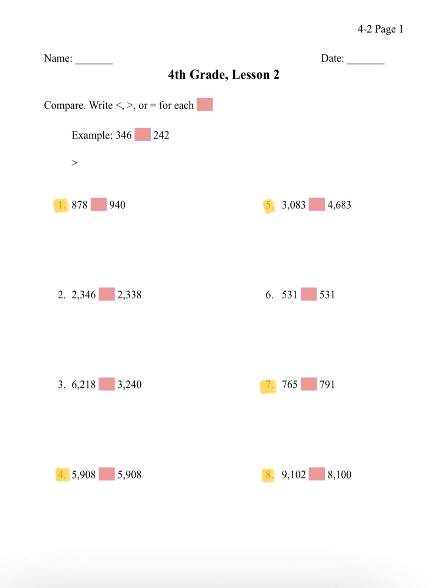Hi, I'm Eileen, and today I'm going to be doing a YLOK 4th grade Lesson 2 worksheet. Don't forget to write your name and your date. The directions say compare — write greater than, less than, or equal to for each blank spot. The example we have is 346 and 242. The answer is that 346 is greater than 242, because if we look at the 100th place, we have a 3 and a 2, and 3 is bigger than 2.